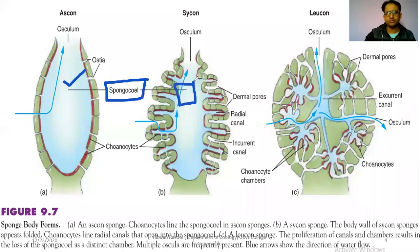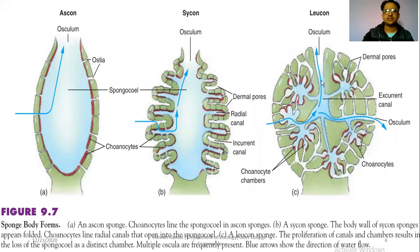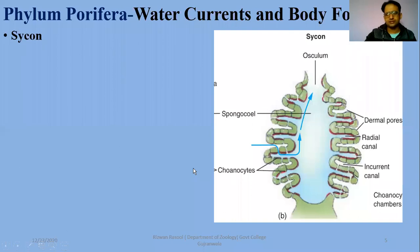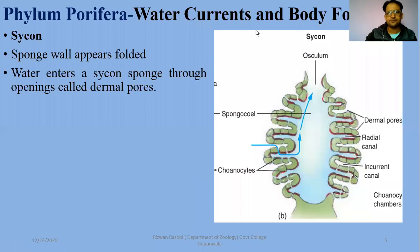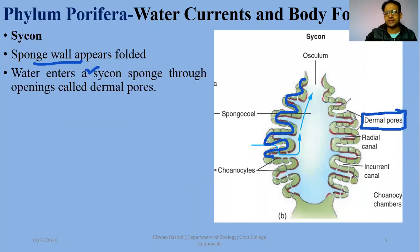In the Sycon body form, the spongiocele cavity also exists but in a folded form. In Sycon sponges, the body wall is folded. Water enters a Sycon sponge through openings called dermal pores instead of ostia. Due to the infolding, some pores are formed which are known as dermal pores at different points along the incurrent canals, where water enters.